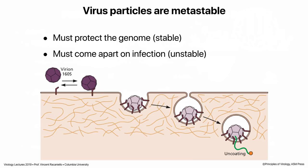Back to metastability. Virus particles are metastable because they have to be stable to protect the particle as it floats in the air, sits on a desk, or passes through your GI tract — yet they have to come apart at some point to release the genome. The genome needs to get out of the particle in order to start replicating in the cell. Here we have a virus particle binding to a cell surface, undergoing a change, and the RNA gets out. That change is uncoding. The purple virion is very stable, and only when it binds the receptor does it let go of the RNA.